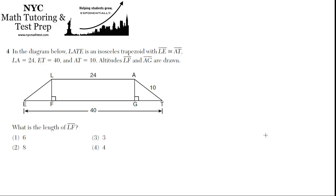In the diagram below, LATE is an isosceles trapezoid with line segment LE congruent to AT, where LA is 24, ET is 40, and AT is 10. Altitudes LF and AG are drawn.